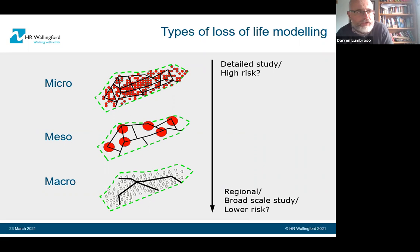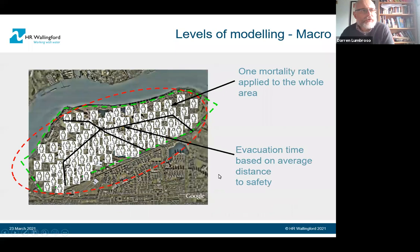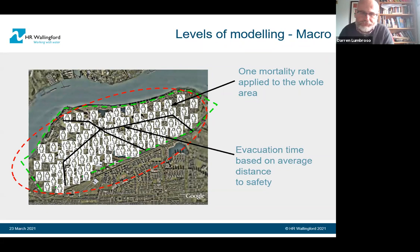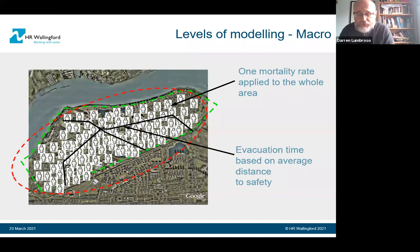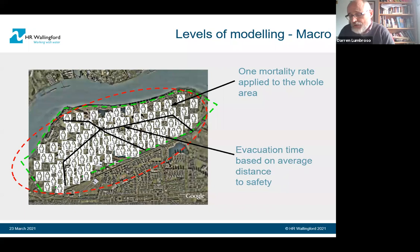In terms of loss of life modelling for floods, I like to think of different levels, varying from what I call micro level models to macro level. In a macro level loss of life model, if you have a thousand people living next to a river with a flood defence and you want to estimate potential fatalities under a flood event, a macro level model would say: if the flood is of a certain magnitude, you get a certain percentage mortality — for example 10 percent mortality gives 100 deaths — along with a very simplistic estimate of evacuation time based on average distance to safety.